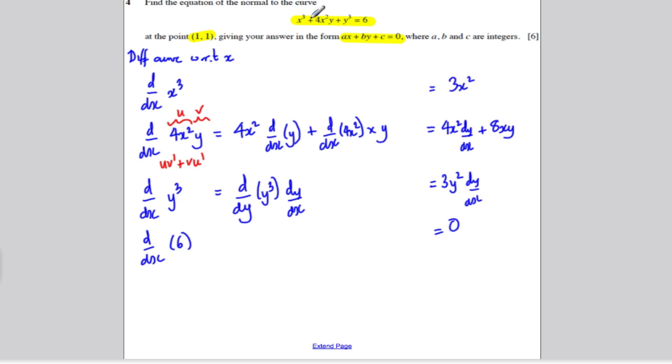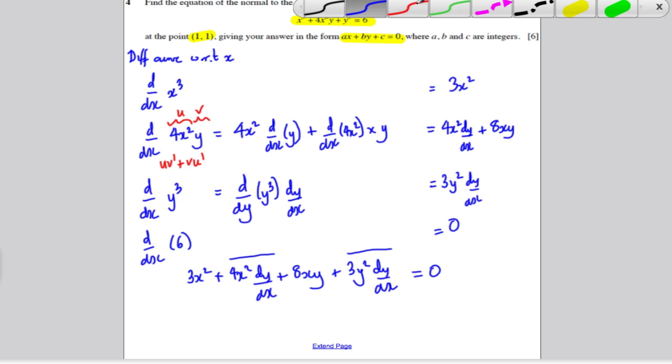So combining all these things into an equation, having differentiated this side and made it equal to the differential of this side. So I'm going to get the equation 3x squared, plus 4x squared dy/dx, plus 8xy, plus 3y squared dy/dx is equal to 0. And I'm going to factorize, I'm going to consider that term and that term and factorize dy/dx. So dy/dx, I'm going to have 4x squared, plus 3y squared, plus 3x squared, plus 8xy is equal to 0.